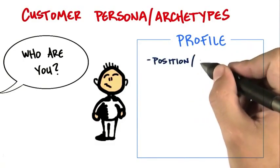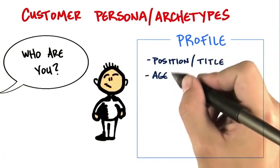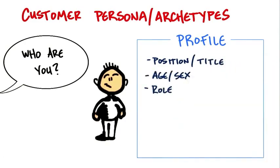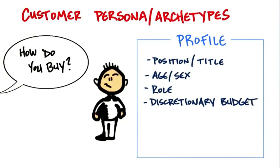If they're in a company, their position and title, their age, their sex, their role. For consumers, it could be parents, it could be a child, it could be a housemate, et cetera. How do they buy? Where do they buy? How much money do they have — discretionary to spend? And again, it's true in companies, and it's true for consumers.